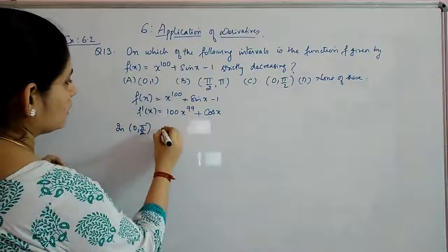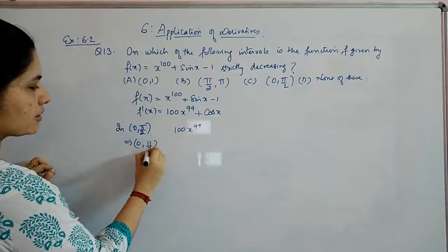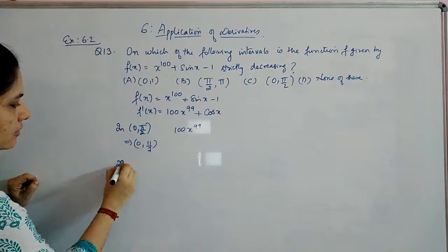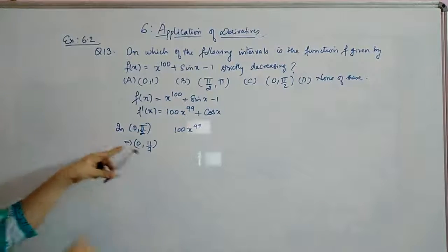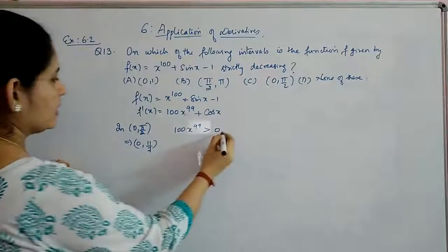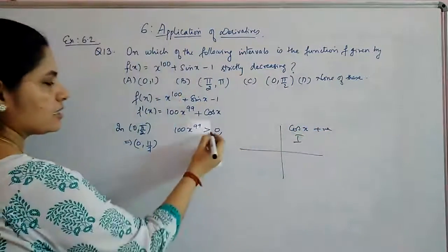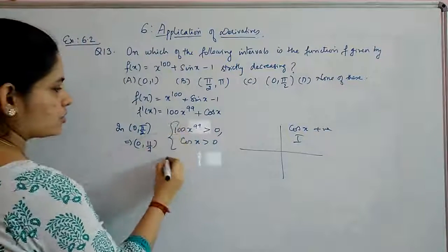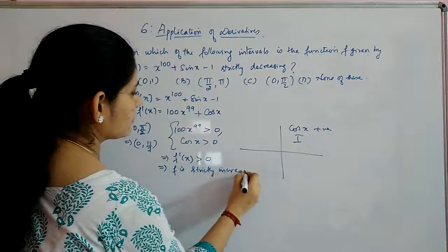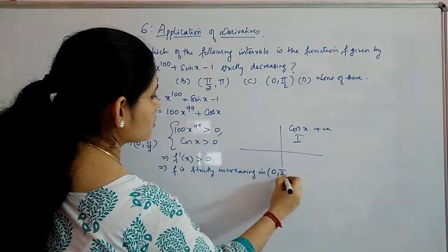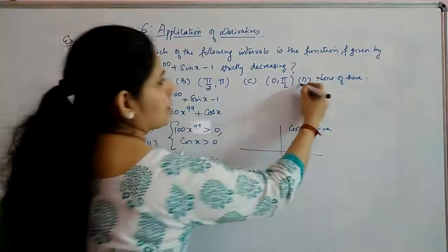For the interval (0, π/2): 100 x raised to 99 is again greater than 0, and this interval is in the first quadrant where cos is positive for any value. So cos x is also greater than 0, giving f dash of x greater than 0 — the function is strictly increasing in (0, π/2). Since in all three intervals the function is strictly increasing, option D — 'none of these' — is the correct answer.